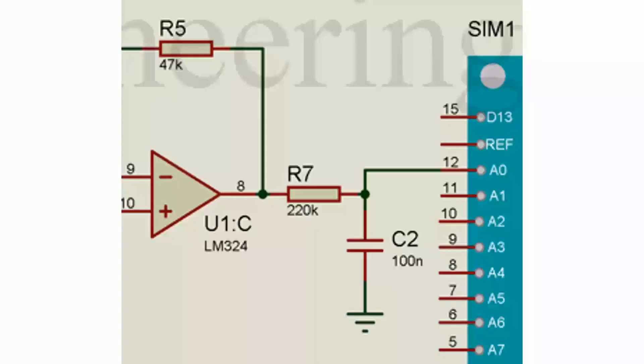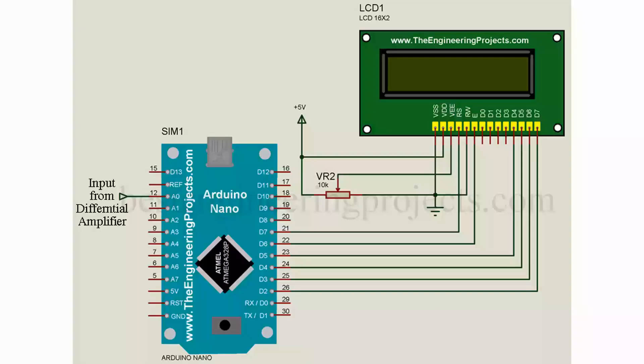Now the output of this differential amplifier is given to analog pin Arduino A0 through a high value resistor and one capacitor which acts as a low pass filter to filter out noise if available. Arduino reads the voltage division and converts it into temperature using equation and displays it over LCD.